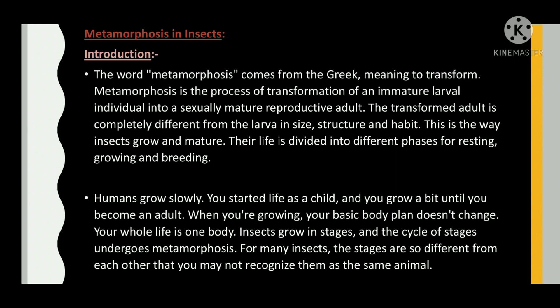The transformed adult is completely different from the larva in size, structure and habit. This is the way insects grow and mature. Their life is divided into different phases for resting, growing and breeding.